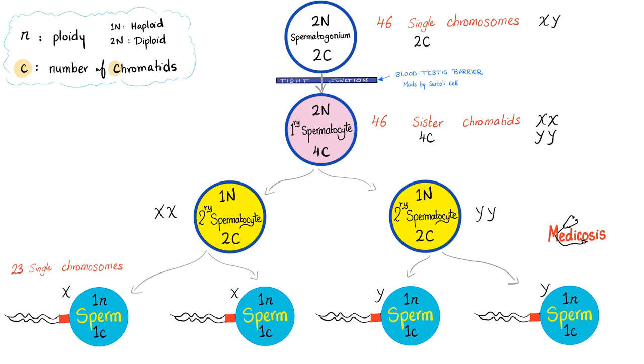So 1N is haploid. 2N is diploid. And the C is the number of chromatids. So when I say that the spermatogonium is 2N and 2C, 2N means it's diploid. So it's 46. 2C means it is just single chromosome. But look at this 4C. Oh, they have 46 sister chromatids. Oh, you know when they align together? Yeah, the tetrads. They are getting ready to become secondary spermatocytes. These are haploid. However, they are 2C. The end result will be some sperms. Some of them are X. Some of them are Y. X plus ovum will give you a female. Y plus ovum will give you a male. The sperm is haploid. And just 1C.